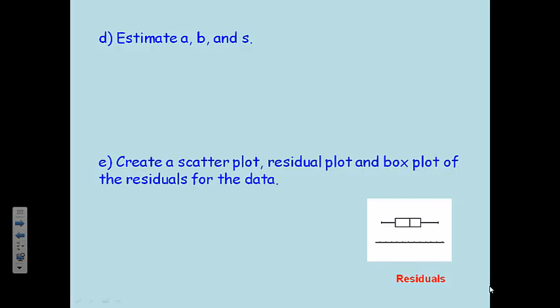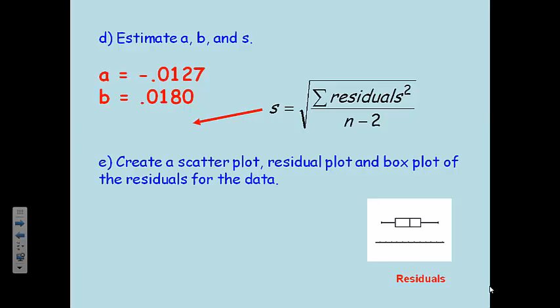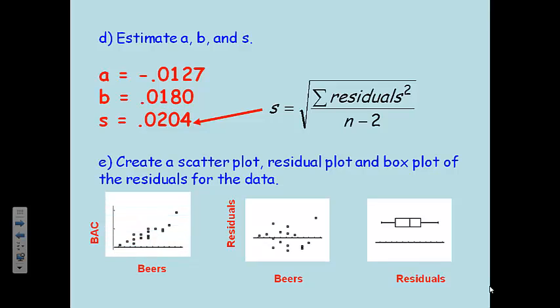We're going to estimate our A, our B, and our S. We're going to use our data. We're going to estimate A was from our calculator, negative 0.0127. B was also from the calculator, 0.0180. And the residuals, the S, that's also from the calculator, 0.0204. Next up, we're going to create three different plots, a scatter plot, a residual plot, and a box plot. Spend some time tonight reminding yourself how to graph all of these things on a calculator. So first we did a scatter plot, blood alcohol content versus beers, looks nice and straight like a straight line. A residual plot, no clear pattern there, which is good, and then a box plot. Looks symmetric, no outliers. So these are the three plots we're going to refer to.